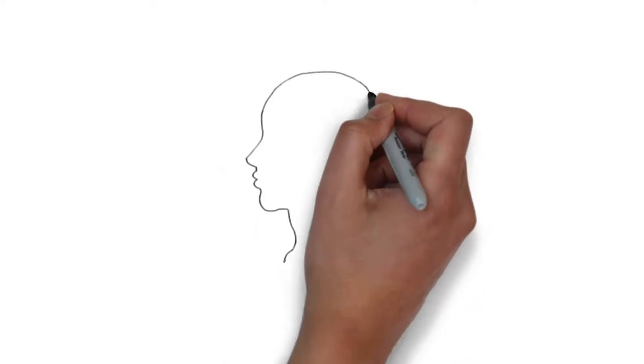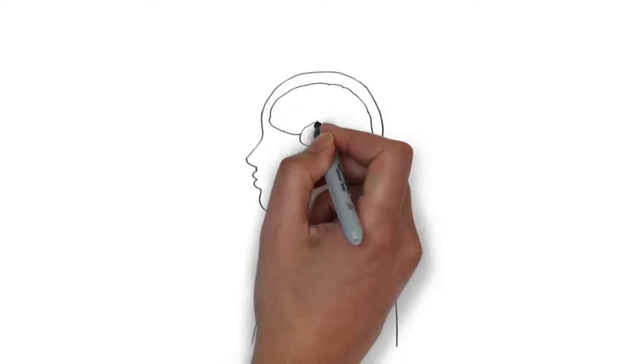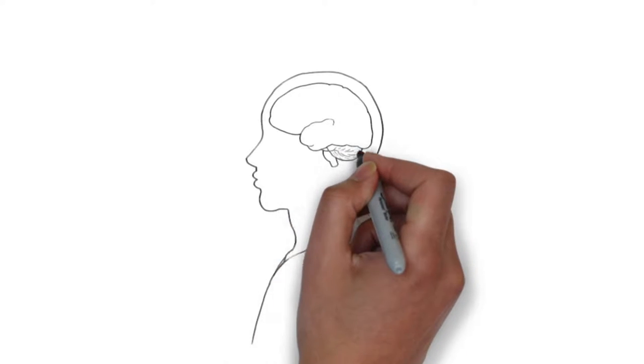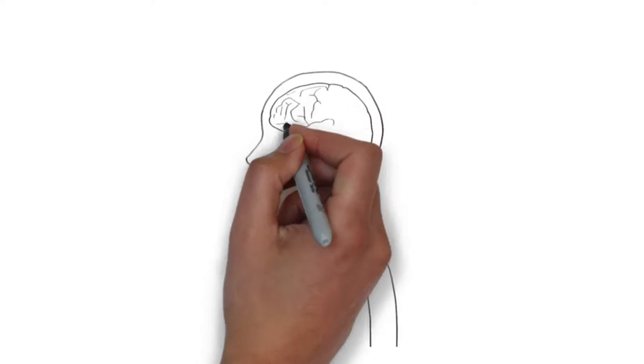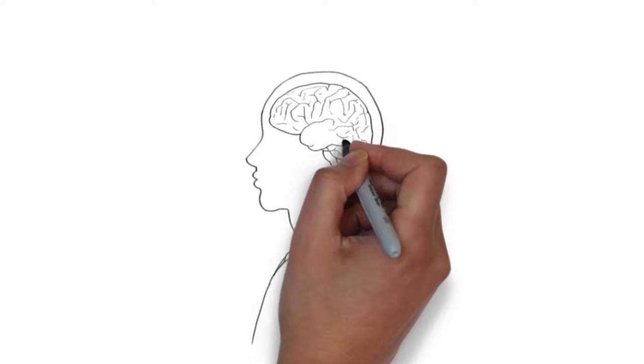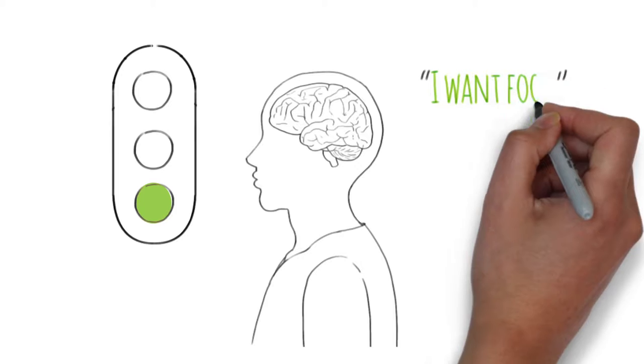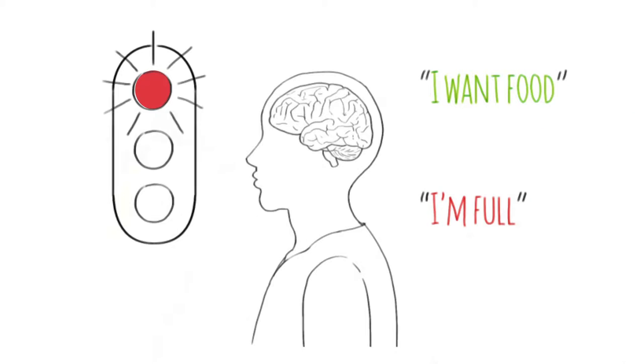But how does your brain know to look for food in the first place? Our bodies communicate with our brains using a signaling system. Little chemical messengers known as hormones are responsible for carrying this information. Scientists have discovered that there are many hormones that tell our brain whether it's time to go out and find more food or if it's time to burn some calories.